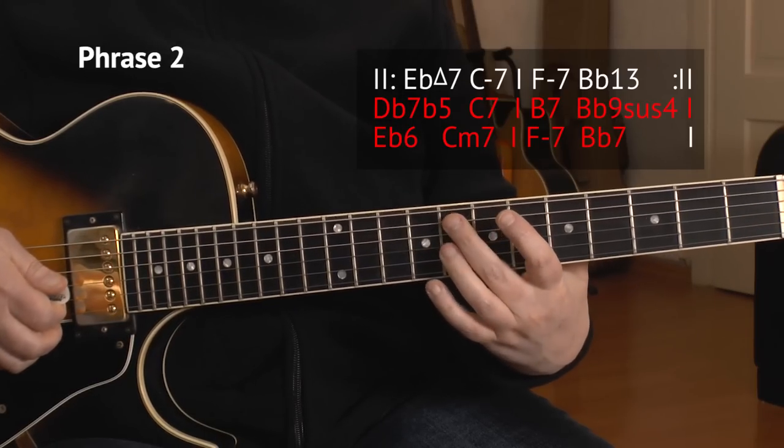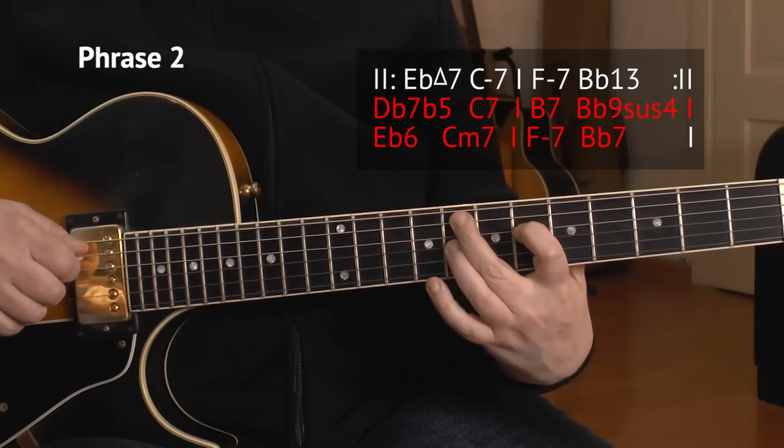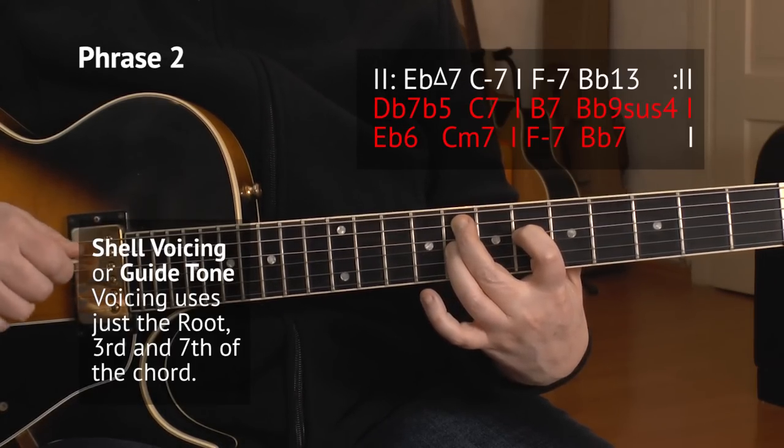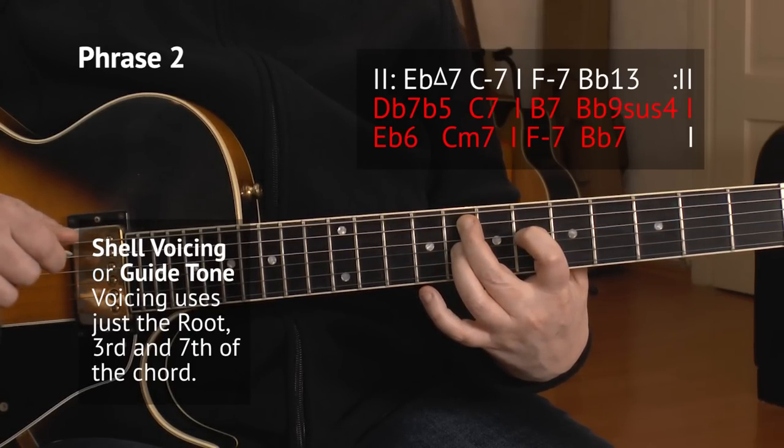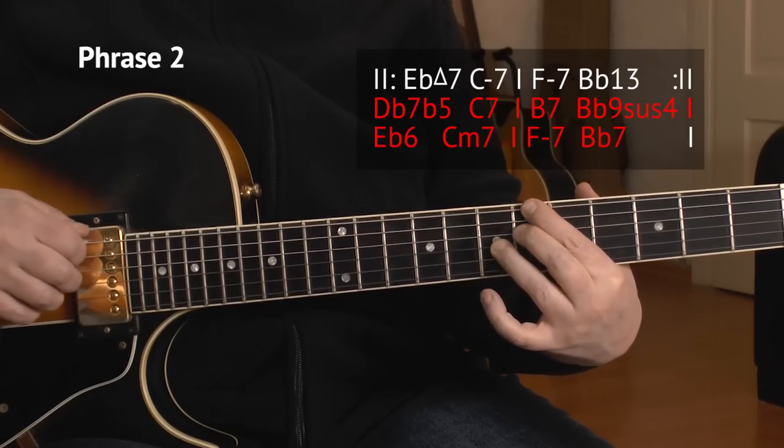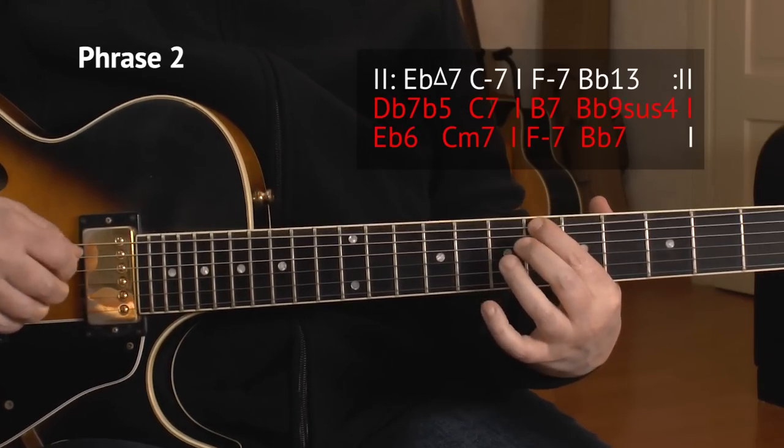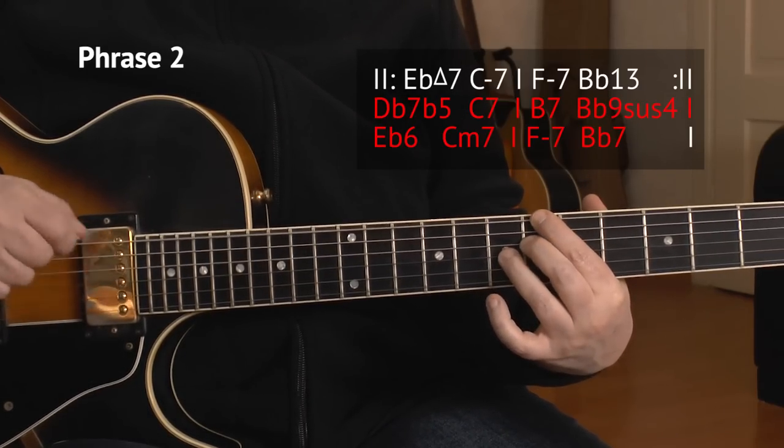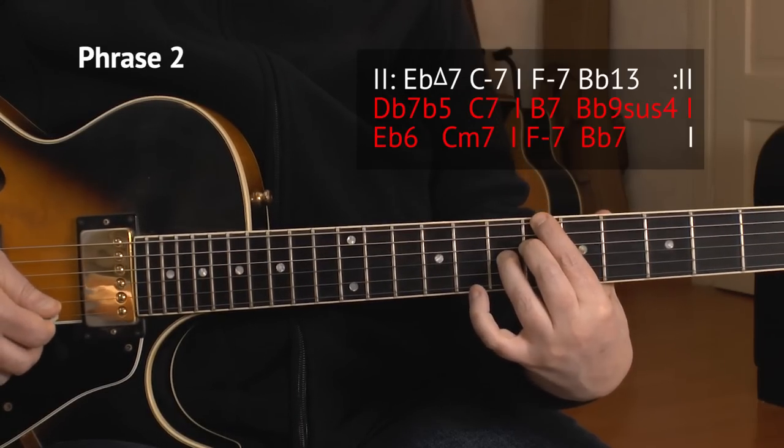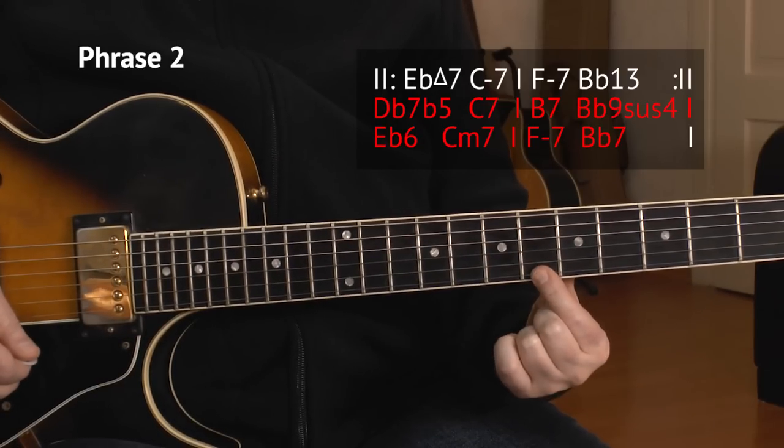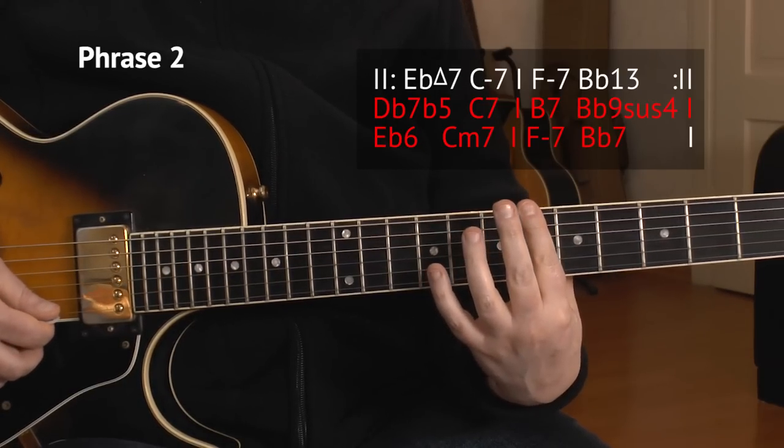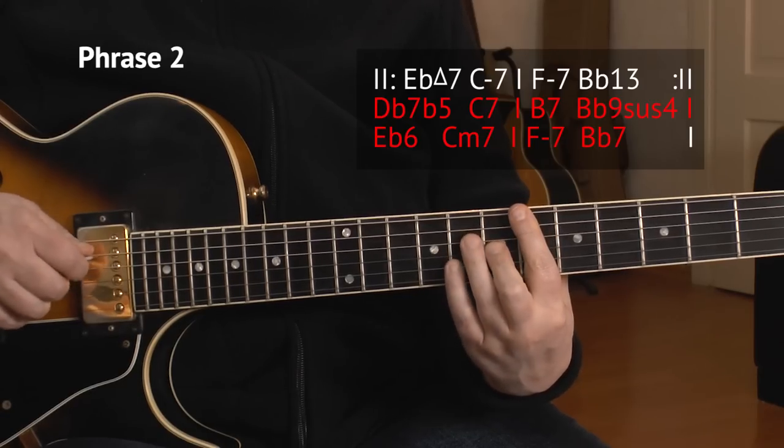Then an Fm7 shell voicing, just the guide tones. That's 8, 6, 8. Play twice. And to the 5 chord, Bb7 shell voicing. 6, 6, 7. And then I have my pickup again, for when I repeat. This is the 6th of the E string, and I bar it already. Because then we have that Eb thing again.